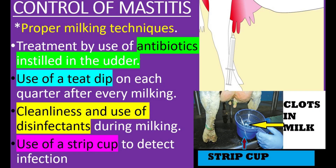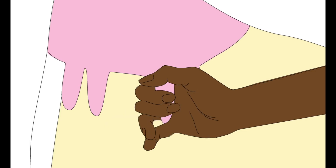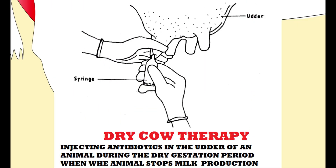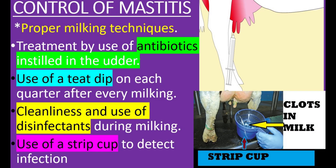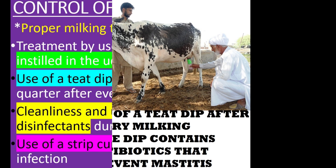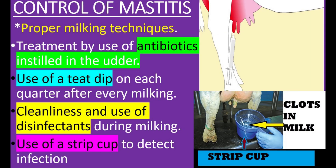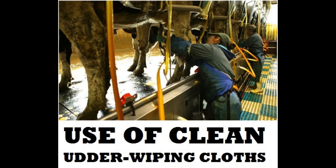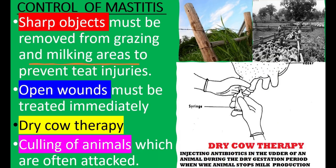Control measures for Mastitis include proper milking techniques, treatment by use of antibiotics instilled in the udder, use of a teat dip on each quarter after every milking, cleanliness and use of disinfectants during and after milking, use of a strip cup to detect infection, and use of separate udder wiping cloths for each animal during milking.